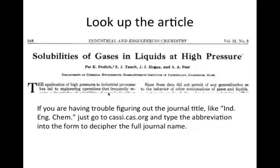Look up the journal title in our library catalog. If the reference confuses you — for example, if you don't know what 'IndEngChem' means — use cassie.cas.org to figure out the full journal title from the abbreviation. Just type the abbreviation into the search box and you'll get a list of possible journal titles. For most ACS journals, like Industrial and Engineering Chemistry, Akron has a full text subscription. You can download the full text and read the experimental data. This particular example would have been difficult to find with a typical keyword search because neither hydrogen nor cyclohexane are in the article title.